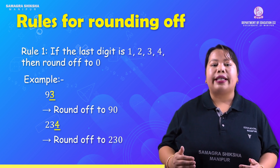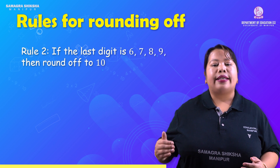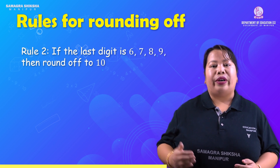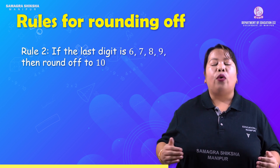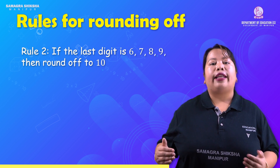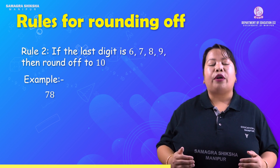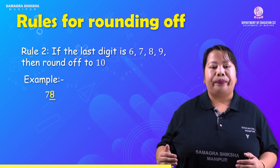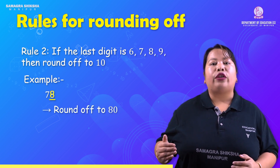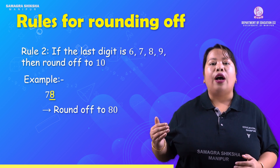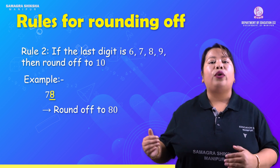Rule 2: if the last digit is 6, 7, 8, or 9, we round off to 10 — meaning we add 10. For example, 78: the last digit from the right side is 8, so 8 rounds up. That means 78 is rounded off to 80.